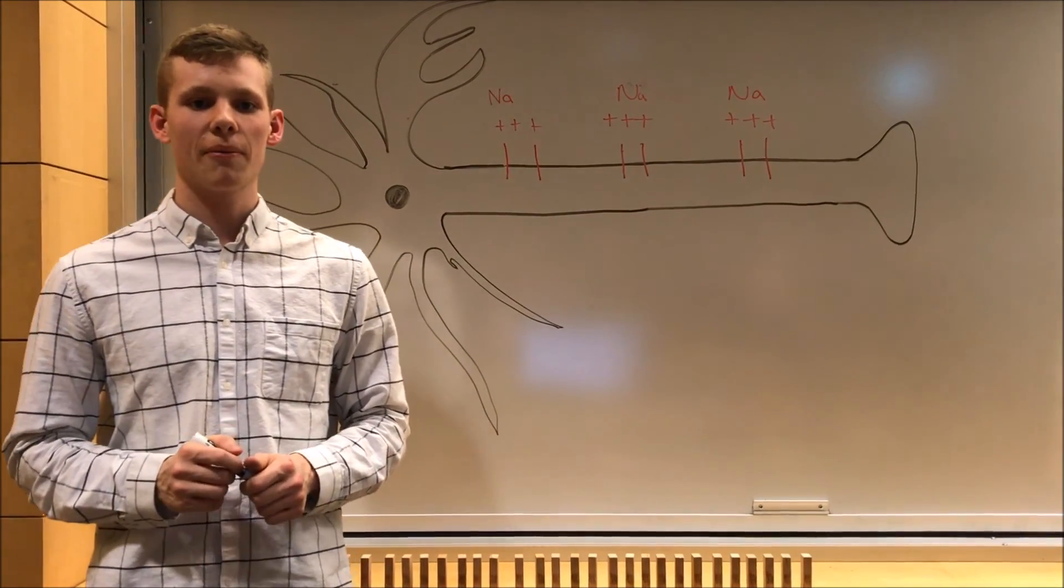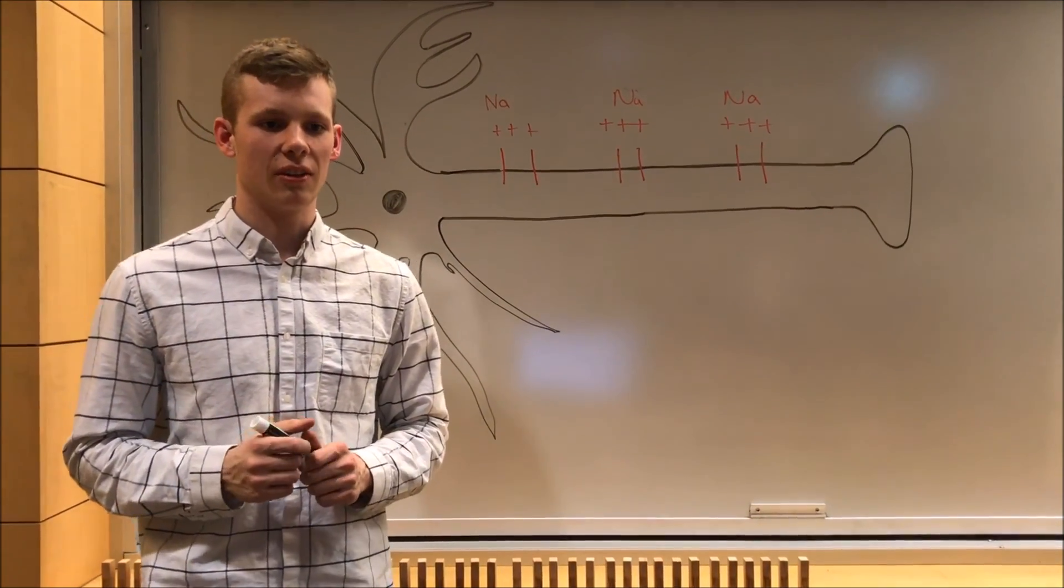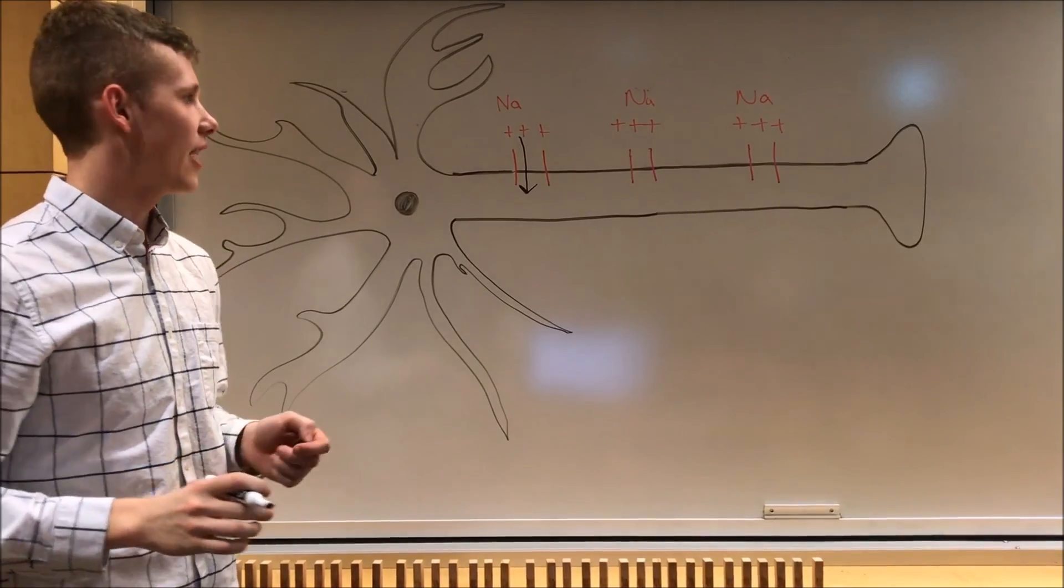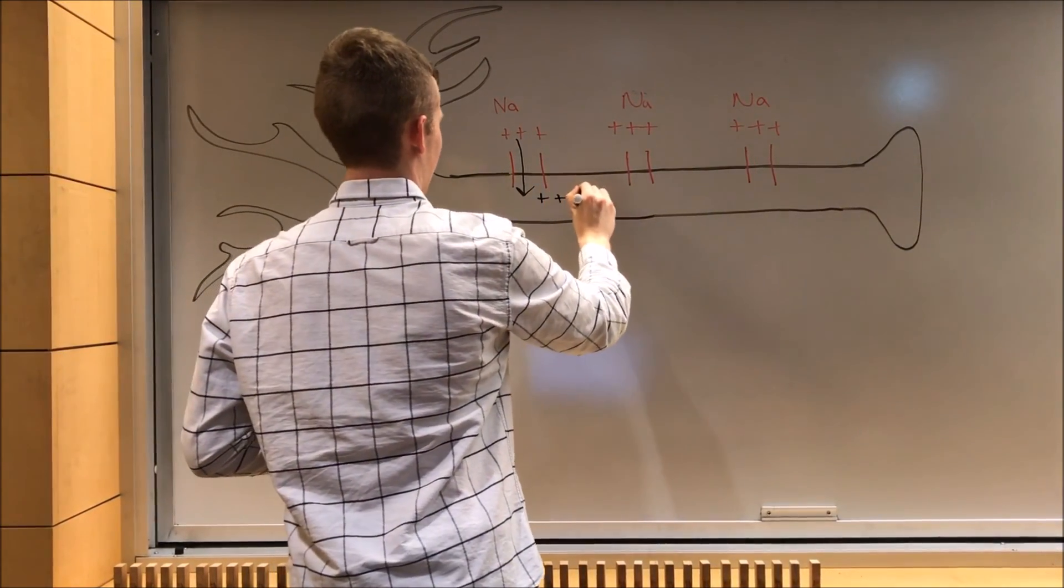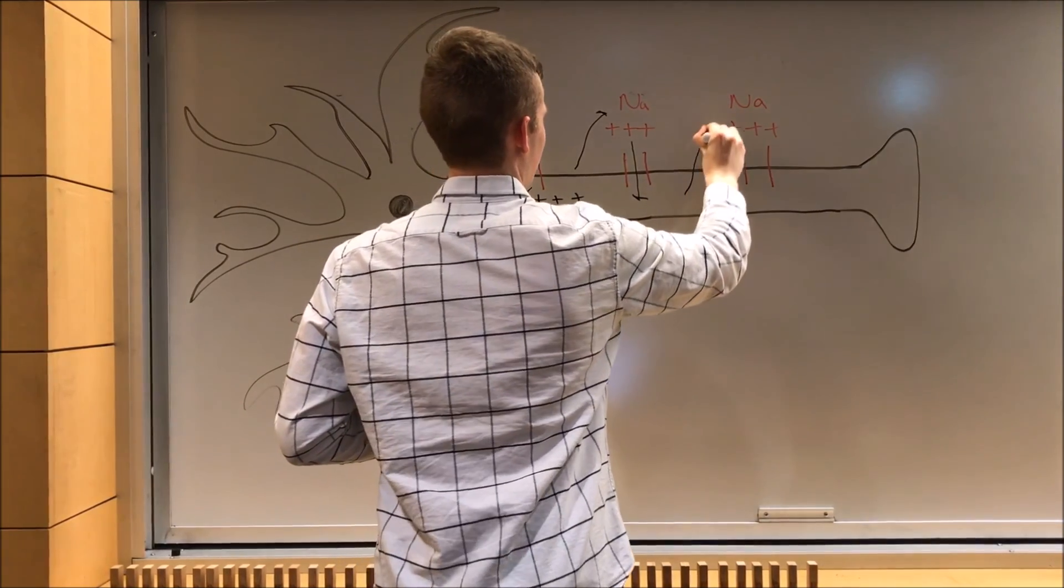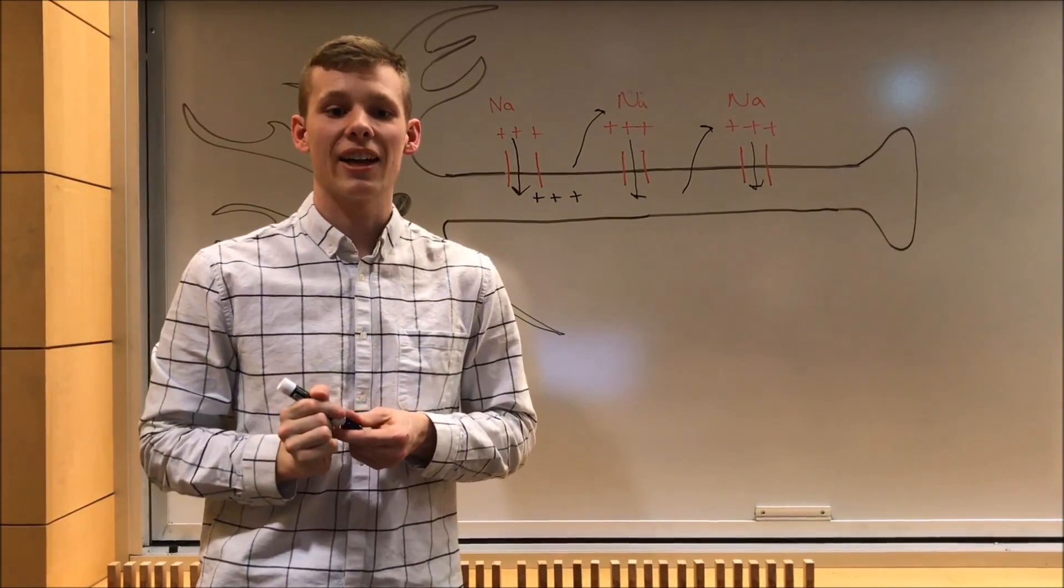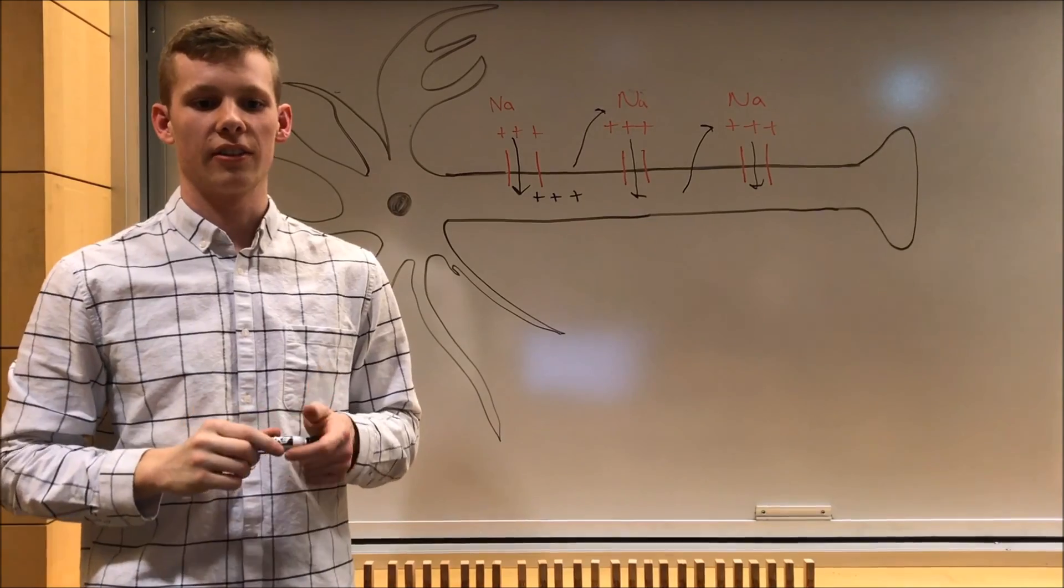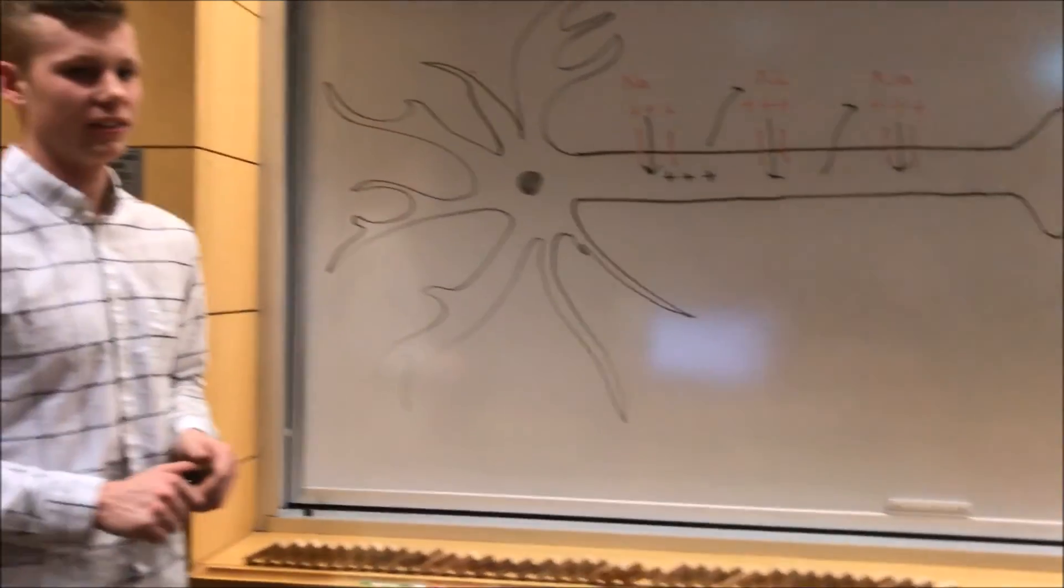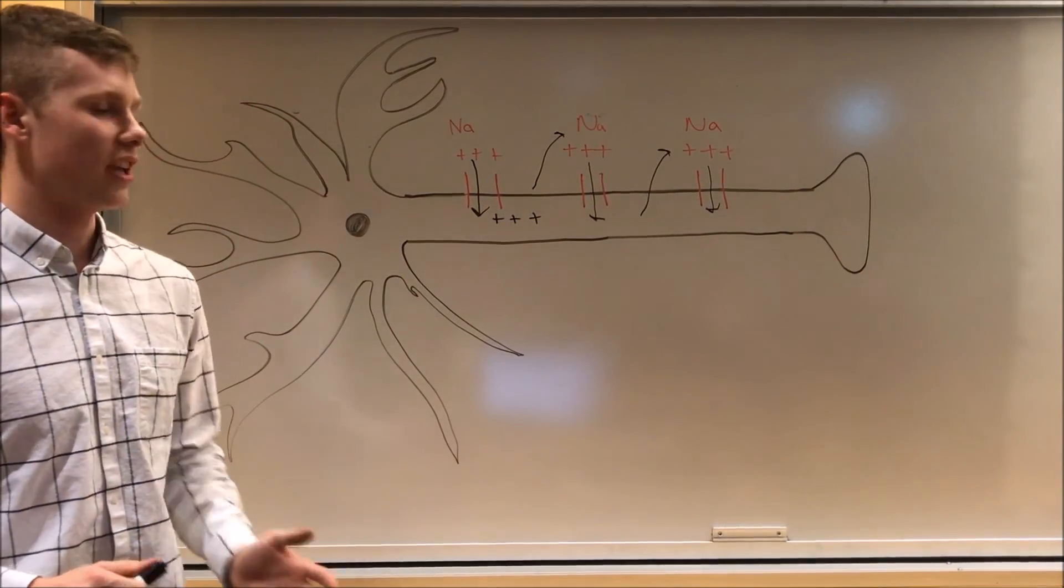For a nerve to send signals to and from the brain, the action potential we have described must be able to travel down the neuron. As we discussed earlier, sodium rushes in when membrane potential reaches threshold. When this positive sodium rushes in, that causes the neighboring areas to also become positive. Then, that triggers their own action potential, and more sodium rushes in. As you can see, it just continues down the line. As sodium rushes in, this helps the neighboring areas reach threshold, and that allows the action potential to travel down the neuron. This is much like knocking down one domino. Once you start the first, all the rest go down the line. So, reaching threshold in one area causes the next area to reach threshold, and thus the action potential travels.